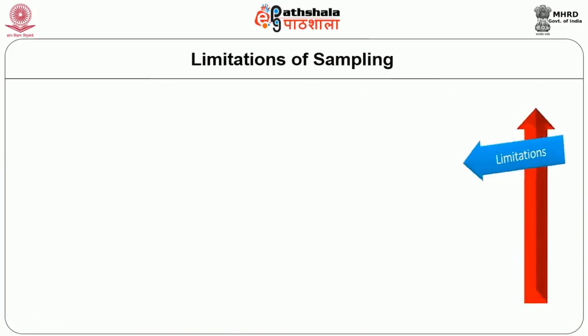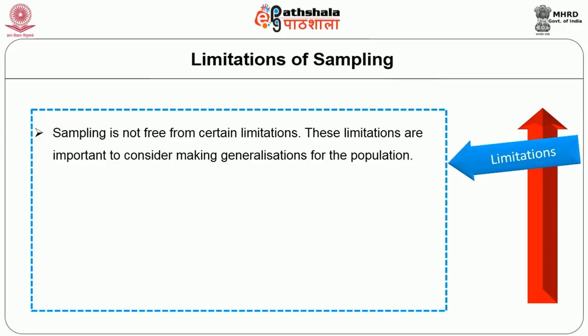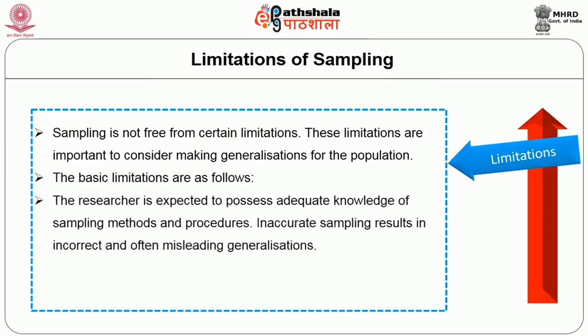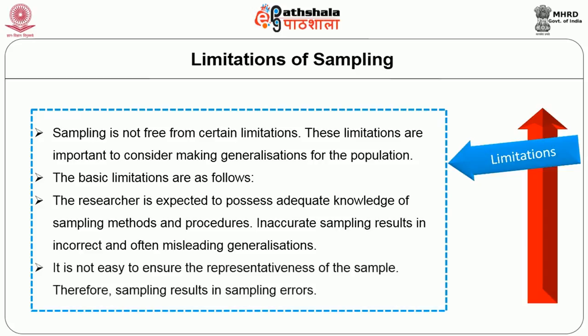Limitations of sampling: Sampling is not free from certain limitations, which are important to consider when making generalizations. The researcher is expected to possess adequate knowledge of sampling methods and procedures. Inaccurate sampling results in incorrect and often misleading generalizations. It is not easy to ensure the representativeness of the sample, and therefore sampling results in sampling errors.